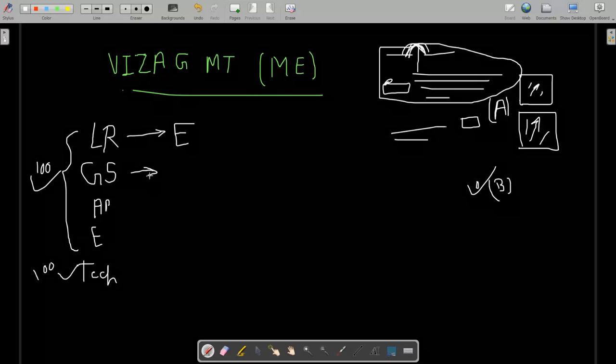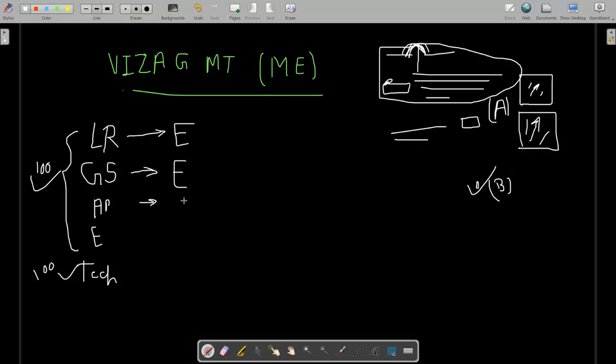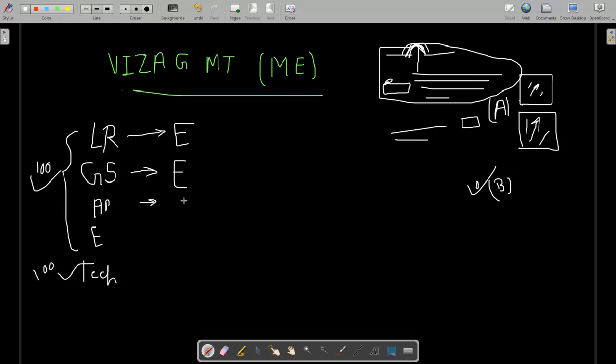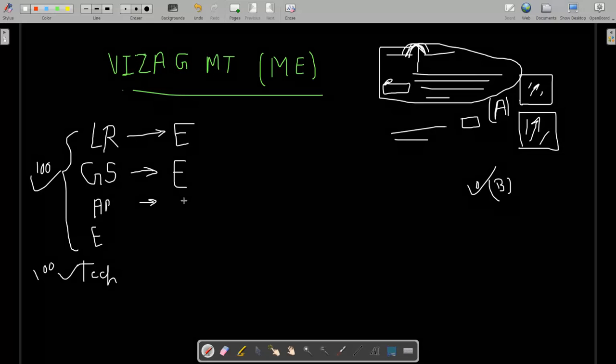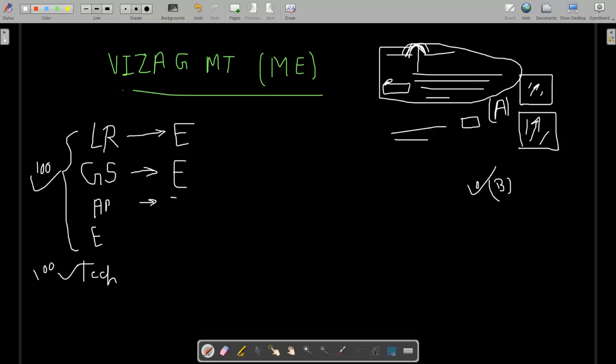GS - all the questions are easy to moderate. There is some static portion, dynamic portion, and current affairs. In aptitude, that is also easy to moderate because there are share market, dividends, and all - three to four questions are there. So this is easy to moderate.